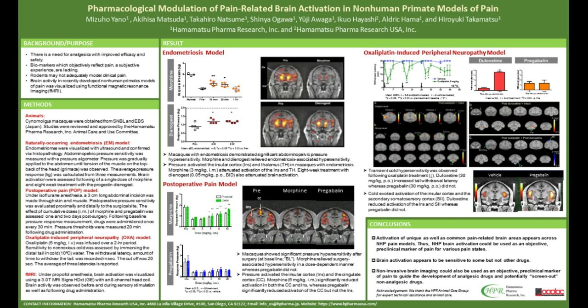These two compounds showed analgesic effects in the behavioral testing. We then tested the brain activity of the animals using functional MRI. As you can see in the figure in the middle section, we can see brain activation in the region called the insular cortex and also the thalamus. This brain activation was attenuated with morphine or the analgesic treatment, which is in line with the behavioral testing.